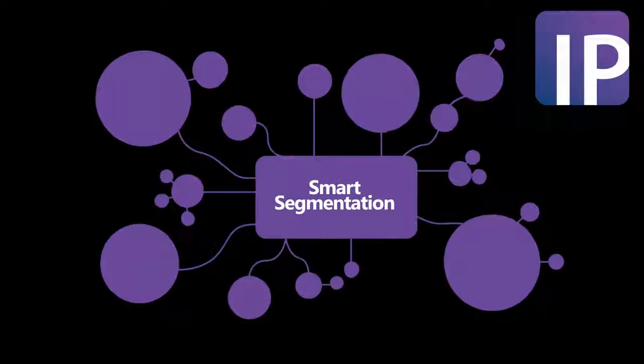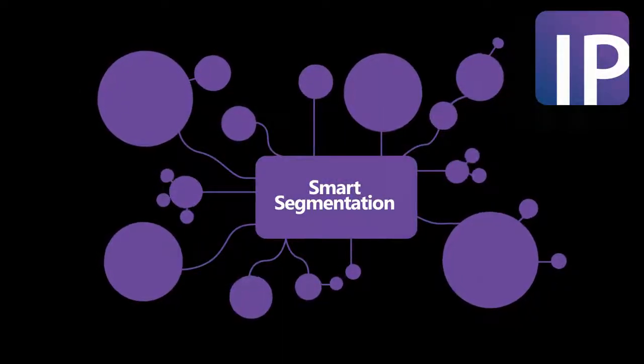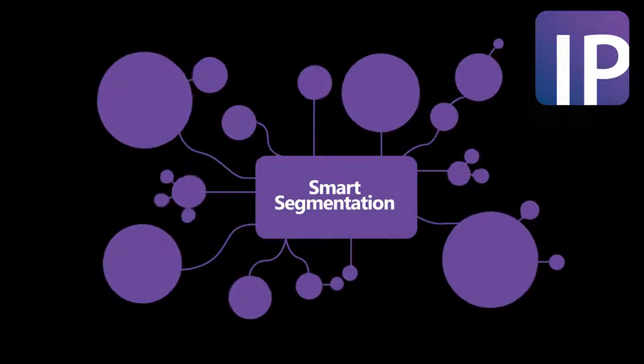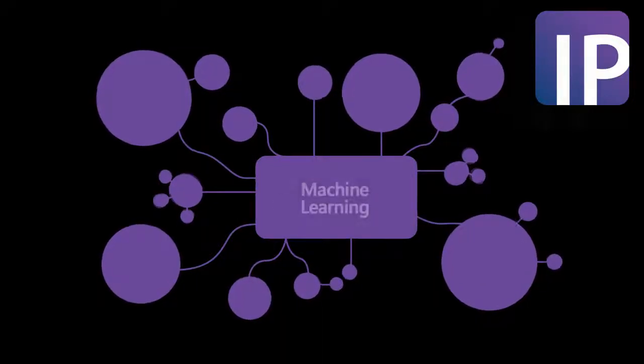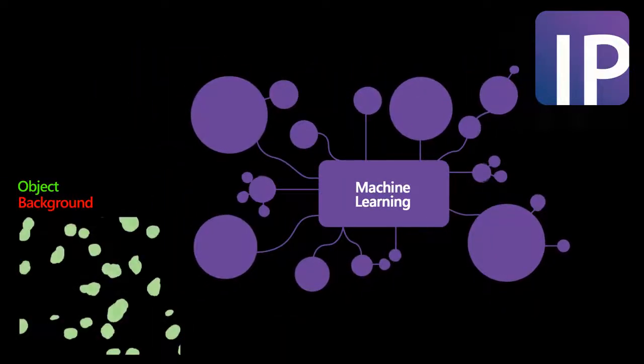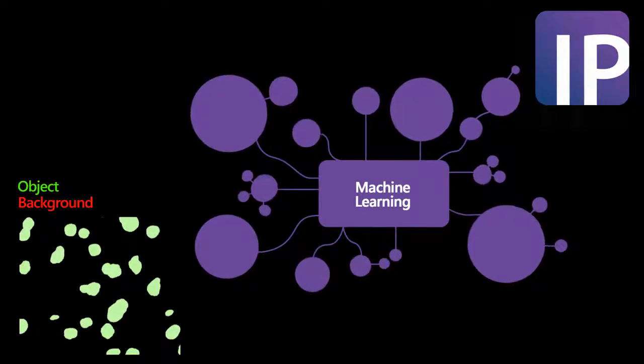Unlike other systems, ImagePro's Smart Segmentation empowers users to easily create personalized recipes for complex images. Users begin by isolating one or more reference objects using regions of interest.